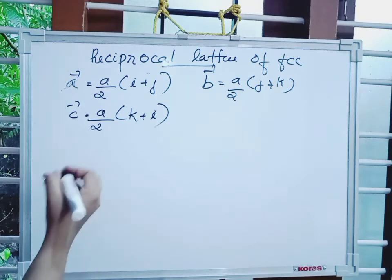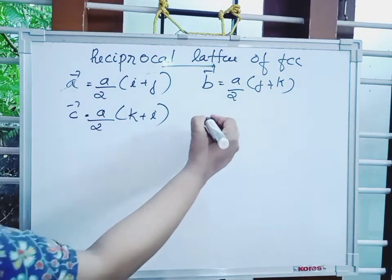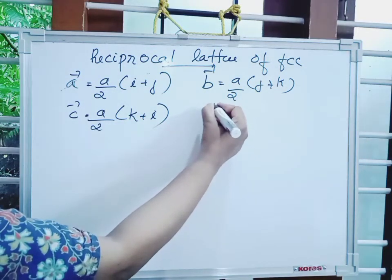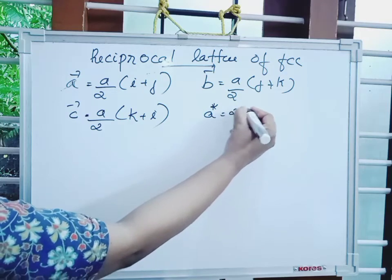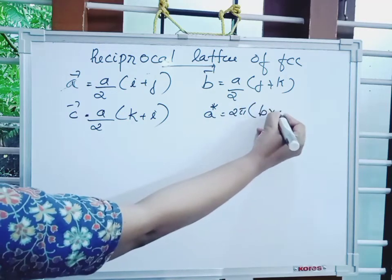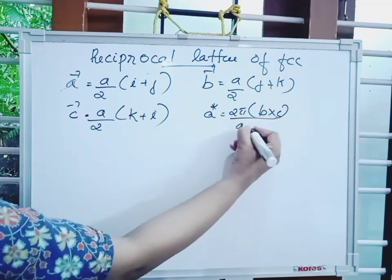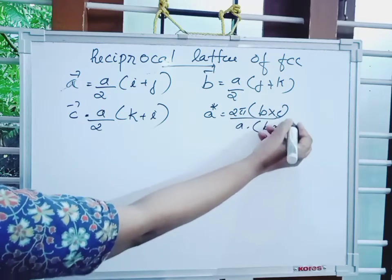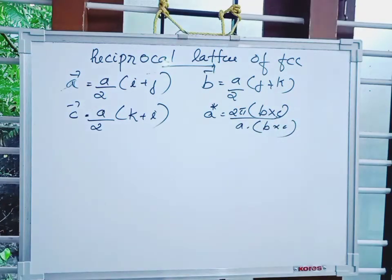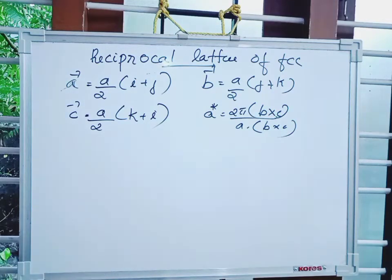We are going to find the reciprocal lattice vectors. a* is equal to 2π times (b × c) divided by (a · b × c). Similarly, b* is equal to 2π times (c × a) divided by (a · b × c). And c* is equal to 2π times (a × b) divided by (a · b × c).